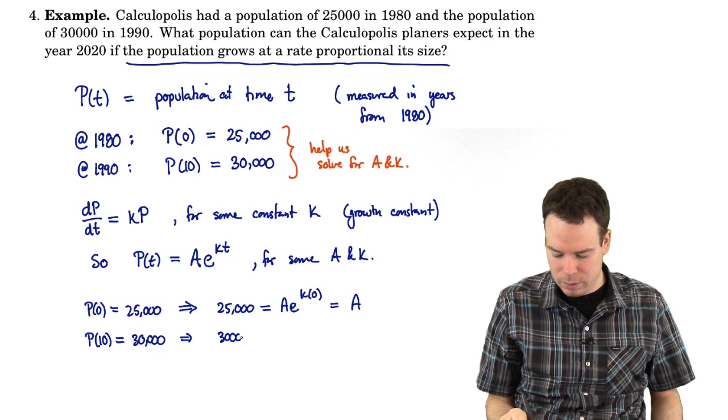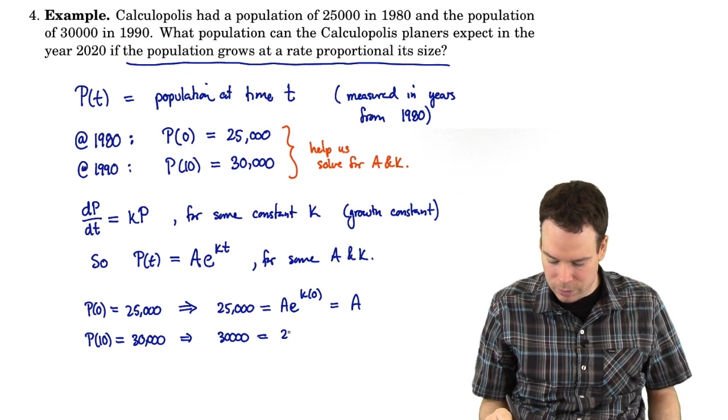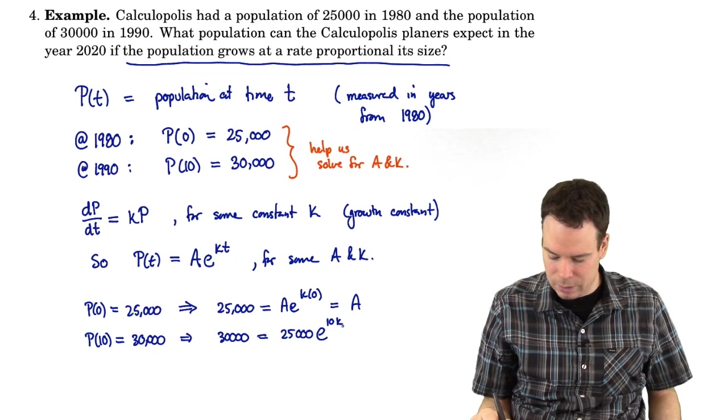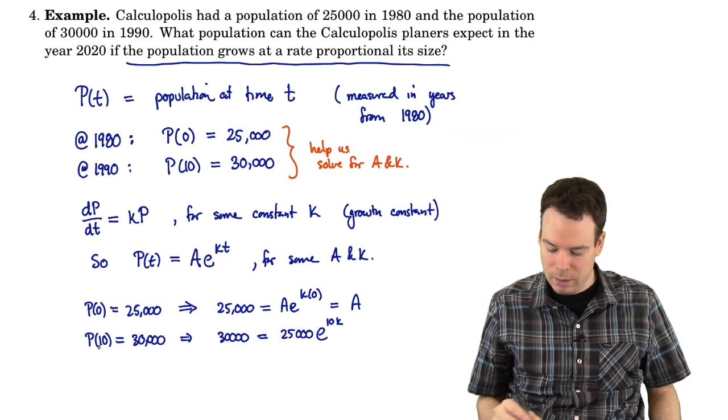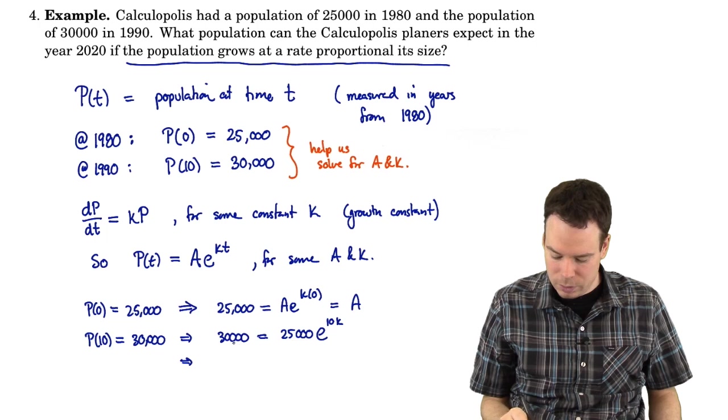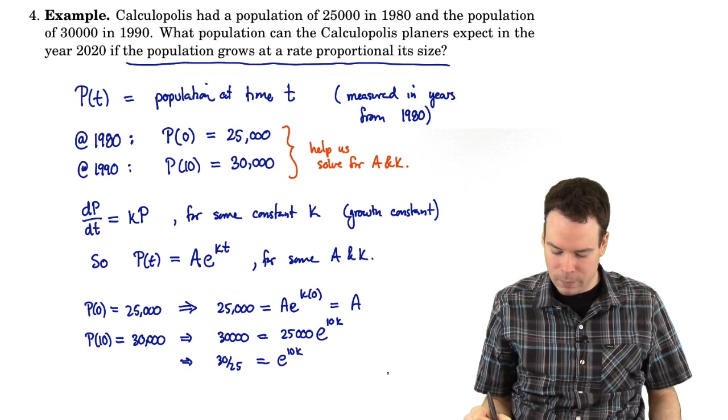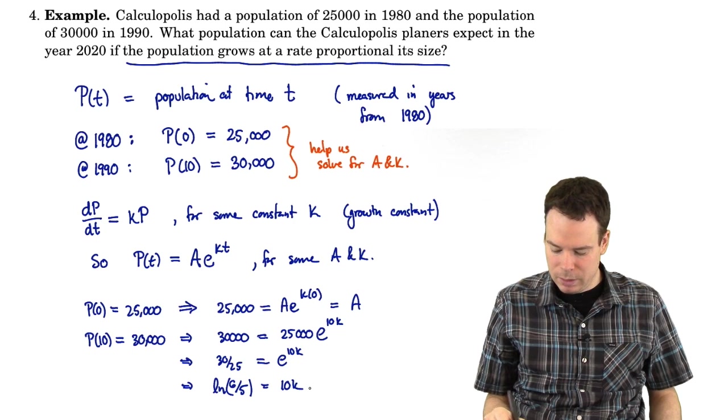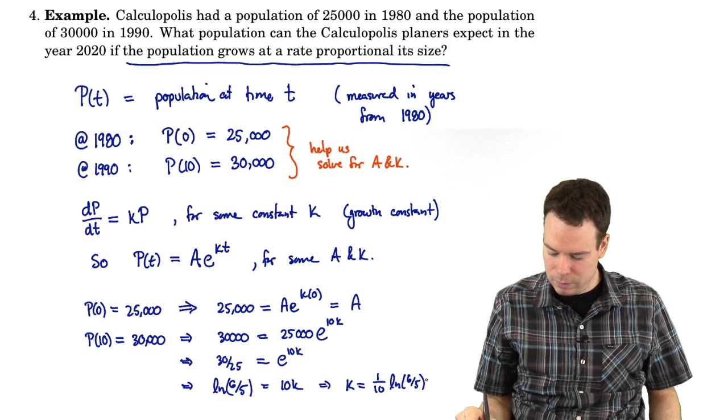What about k? Well, we know P of 10 is 30,000. So 30,000 must be the value of the function at 10. The value of the function is A times e to the k times 10. A we already found in the previous line to be 25,000, times e to the 10k. That's the equation that I get using that information about the population at time 10. Now I've got an equation in k alone which I can solve. So I divide both sides by 25,000. That becomes then 30 over 25. 30 over 25 is equal to e to the 10k. 30 over 25 reduces to 6 fifths. I can take the logarithm of both sides and that becomes 10k. Or in other words k becomes 1 tenth ln of 6 fifths.